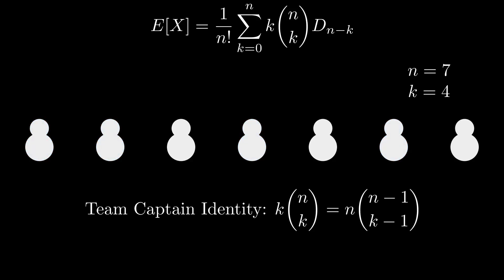Based on how I worded that, we've already seen how the left hand side counts it. The right hand side is counted by first choosing the captain from among all the kids, then choosing the remaining k minus 1 teammates from the n minus 1 non-captains.